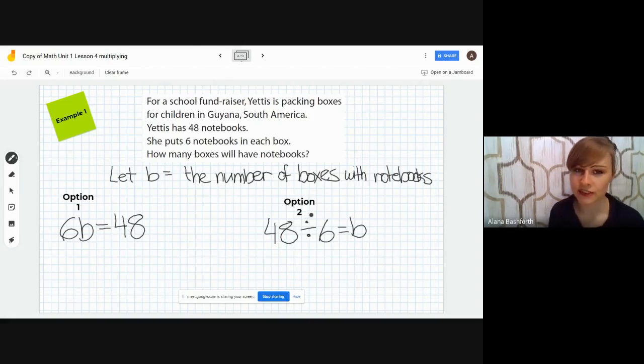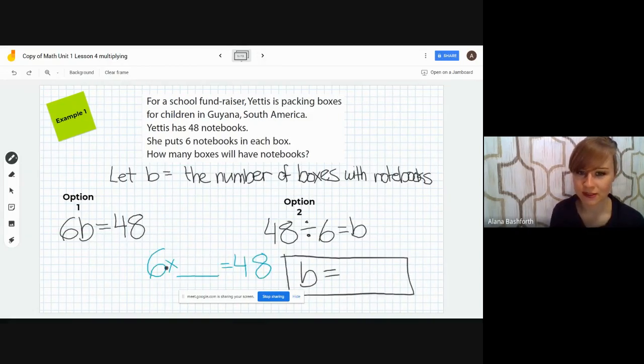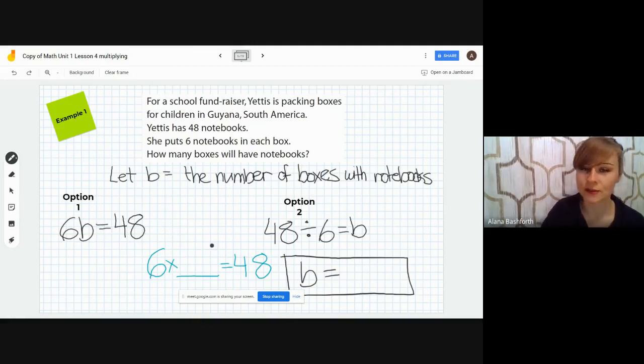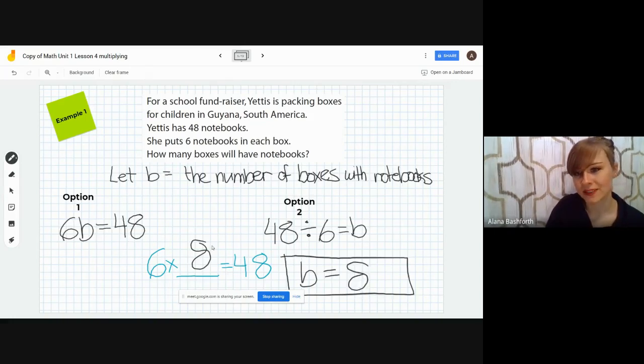Or, if you wanted to do division, you just take 48, which is the answer, and divide it by either 6 or B. In this case, I put 6, and then we made it equal B. When doing either one of these, you're always just thinking, what can I multiply by 6 to get 48? This is what my thinking is: 6 times what equals 48? B means what. If you know your multiplication facts, you know that the answer is 8. That means that B equals 8.